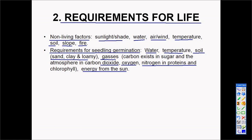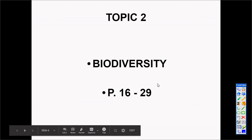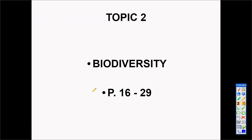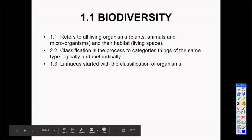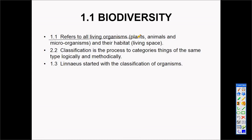Next we talk about biodiversity. 'Bio' means life and 'diversity' means different. So we're going to talk about the different kinds of life that we find in nature. You can follow along on page 16. Biodiversity refers to all living organisms – plants, animals, and microorganisms – that live inside their own habitat or living space.